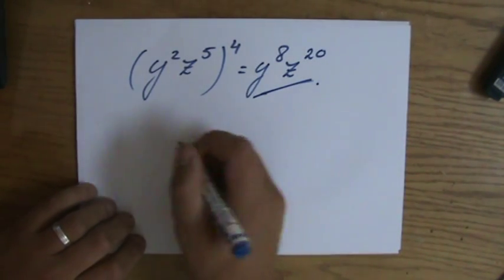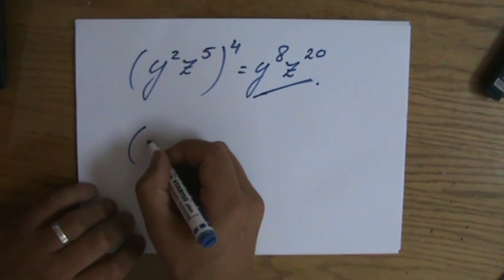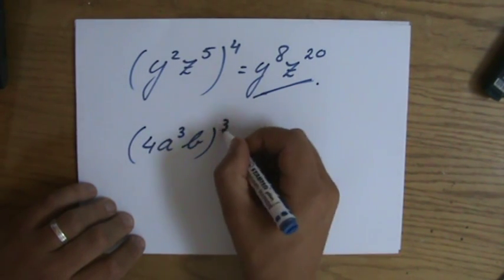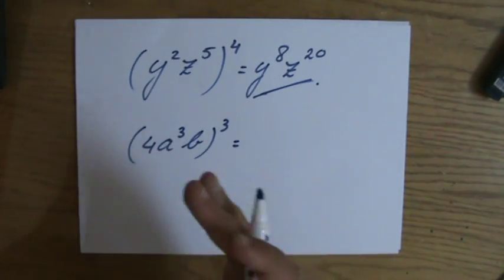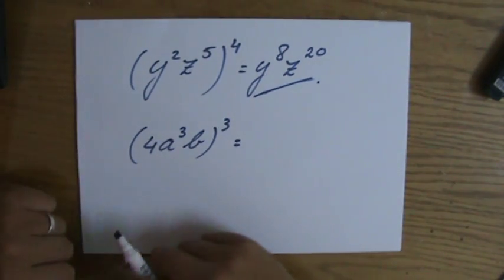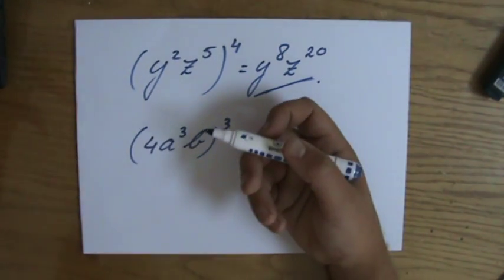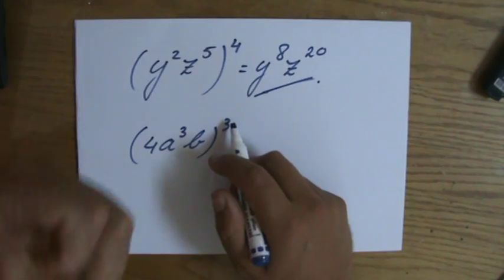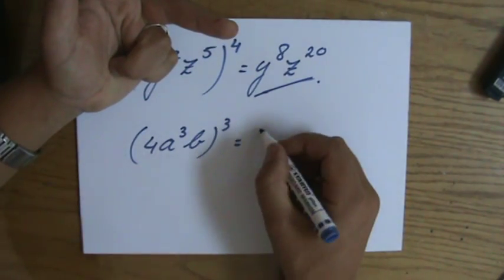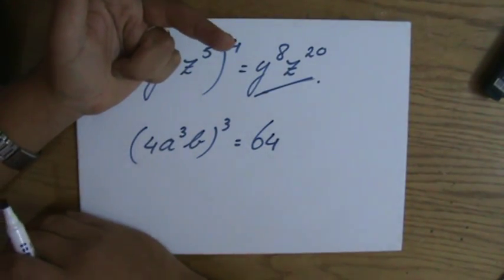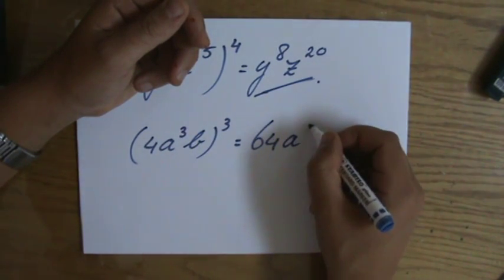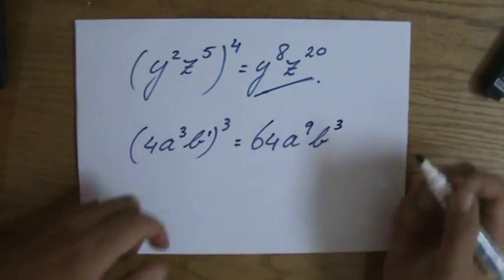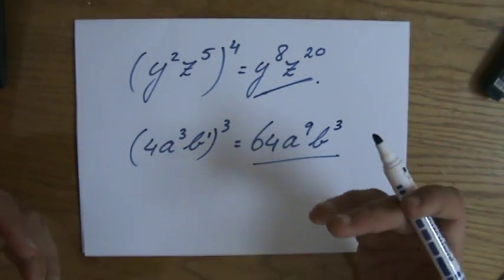I'm going to give you two more examples. Please be a little careful. Let's say 4a to the power 3, b, all to the power 3. Approach these step by step, stay calm. This means multiplying itself three times: 4a³b times 4a³b times 4a³b. Start — and this is what most students forget — with 4 to the power 3: 4 times 4 times 4 is 64. Then a to the power 3, to the power 3, is a to the power 9. And b — the index of b is 1 — so b to the power 1, to the power 3, is b to the power 3.